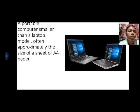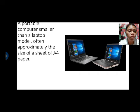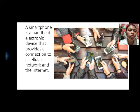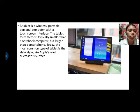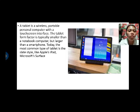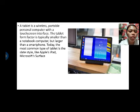A portable computer is smaller than a laptop, approximately the size of a sheet of A4 paper. A smartphone is a hand-held electronic device that provides a connection to a cellular network and the internet. A tablet is a wireless portable personal computer with a touch screen interface, typically smaller than a notebook but larger than a smartphone. The most common type today is the slate style, like Apple's iPad or Microsoft Surface.